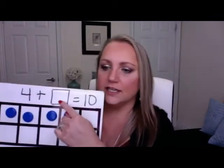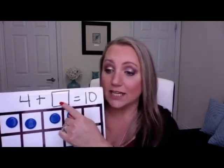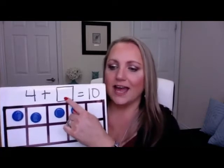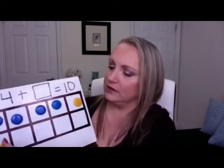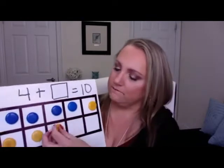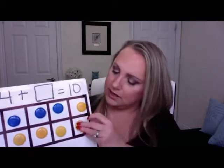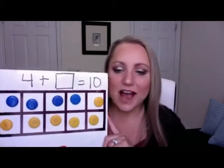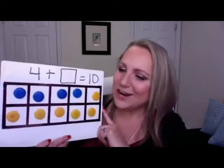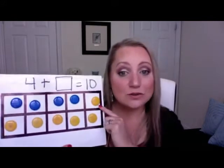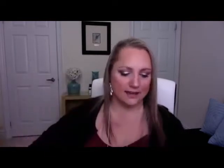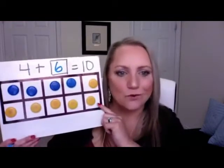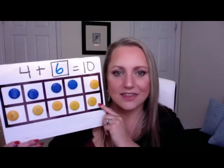Four plus six is 10! Charlotte, Damian, Kian, Francisco, and Liam got it. Let's check and see — count the empty boxes: 1, 2, 3, 4, 5, and 6. So now we know that four plus six equals 10. We have made 10. That was our magic missing number — the six. Four plus six is equal to 10.